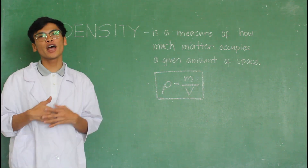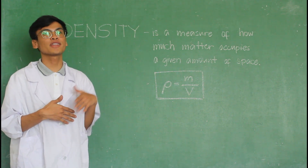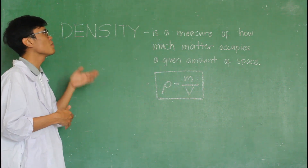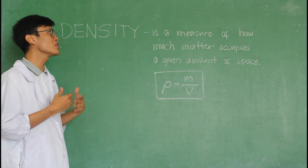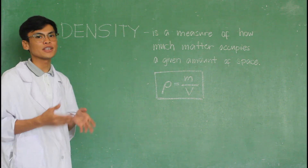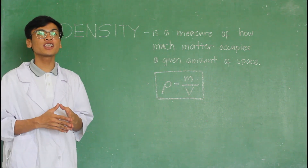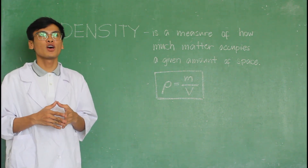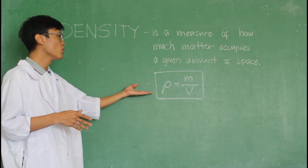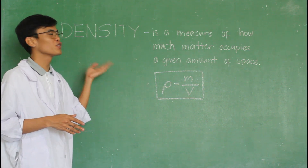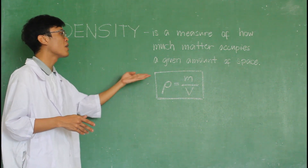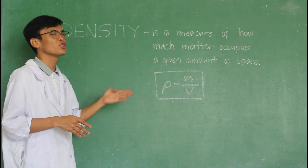So before that, we will define first what is density. A density is a measure of how much matter occupies a given amount of space. And it's related with a given equation: RO, which stands for density, equal to the mass over the volume.